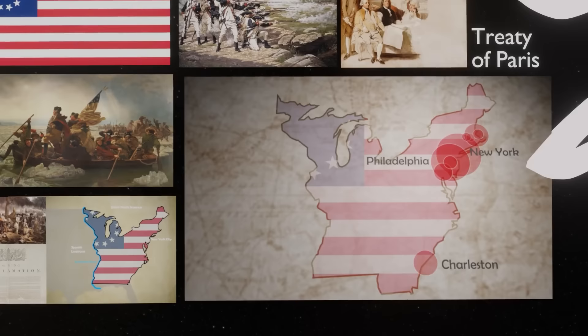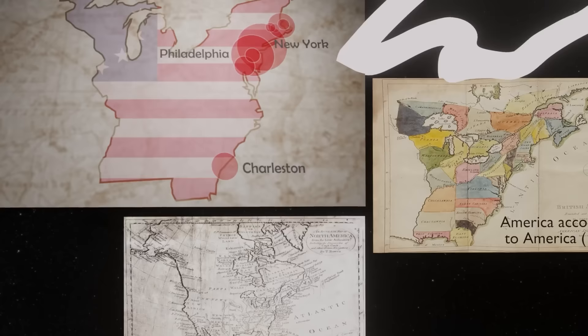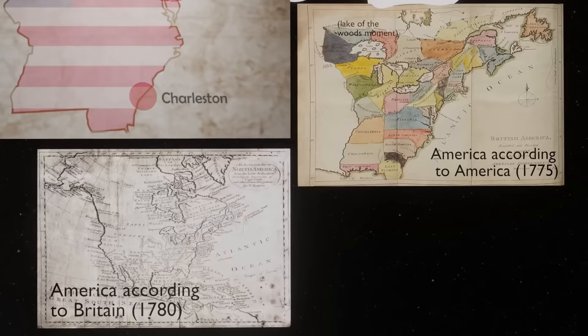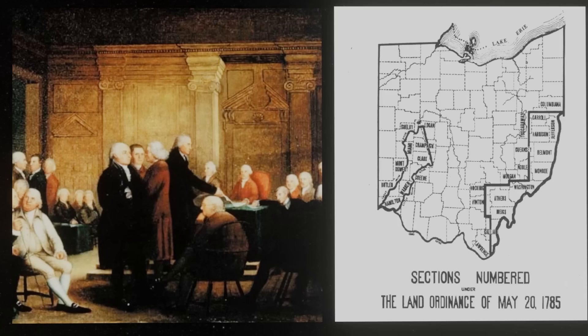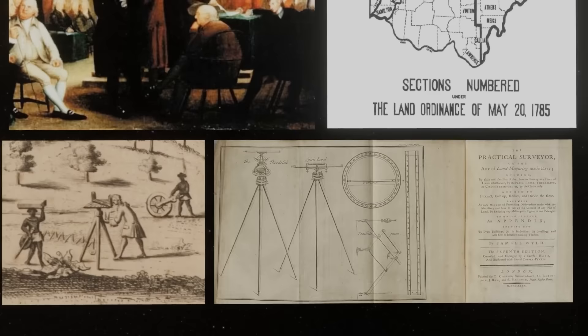Imagine you're America right now — you just won a ton of land, far more than you had before. What do you do next? It's not really your land if no one's living there. To convince people to live in some random new land, you've got to figure out what it actually looks like. No one on either side knew what this theoretical land even looked like. So Congress passed the Land Ordinance of 1785, which was in charge of land surveying — going out into the land, mapping what you see, and dividing it into plots to be sold.